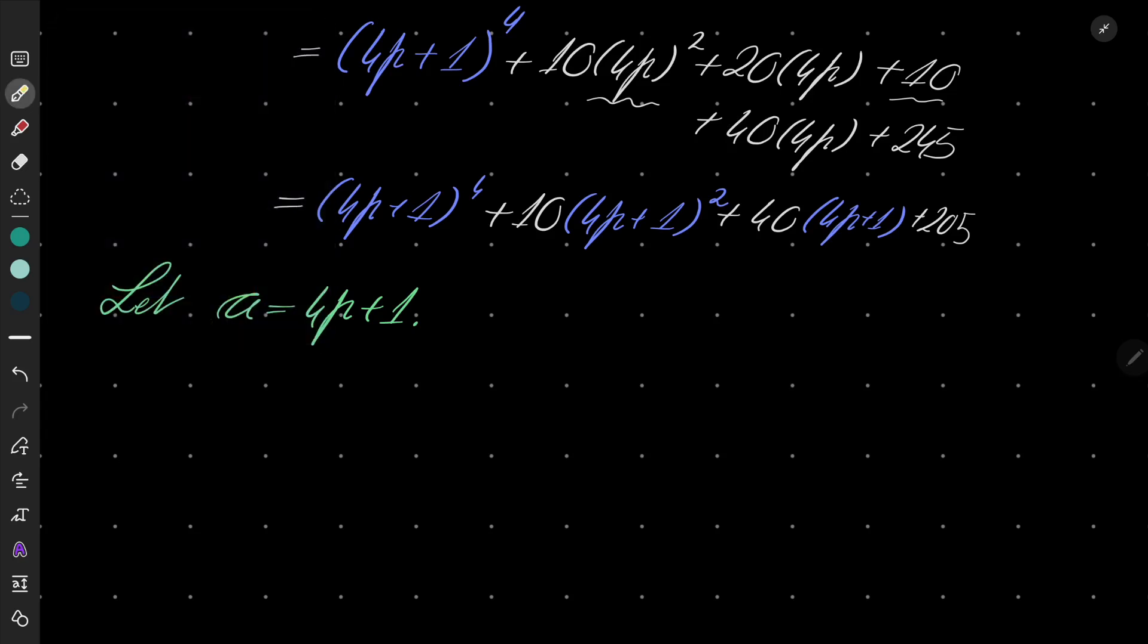And let's consider what are the possible values of a. Well, recall that p was, by assumption, a prime number. It's 2, 3, 5, 7, 11 and so on.